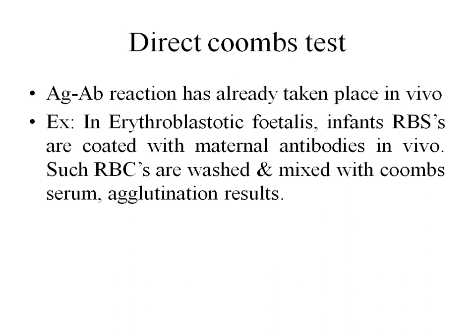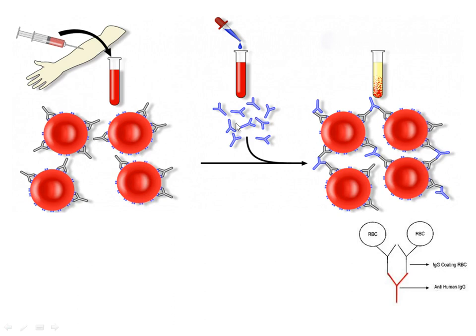We are going to wash the fetal RBCs and then add anti-human immunoglobulins. So if the RBCs are already coated with the anti-RH antibodies, when you add the Coombs serum, we are going to observe agglutination. This is called the direct Coombs test.